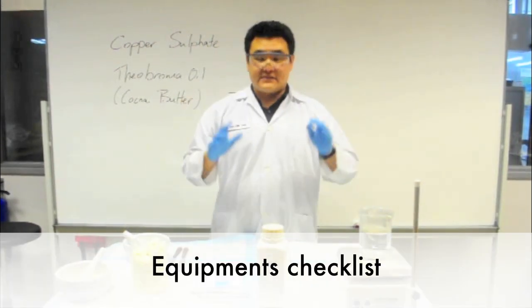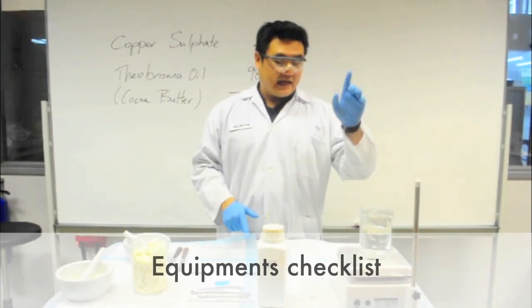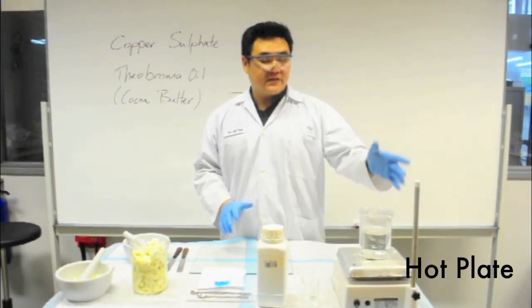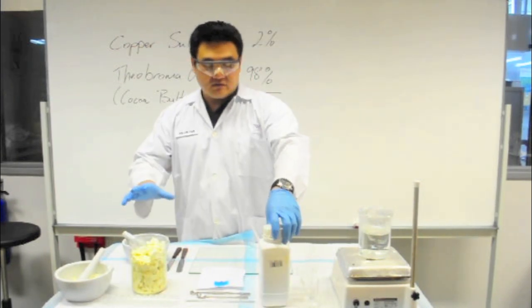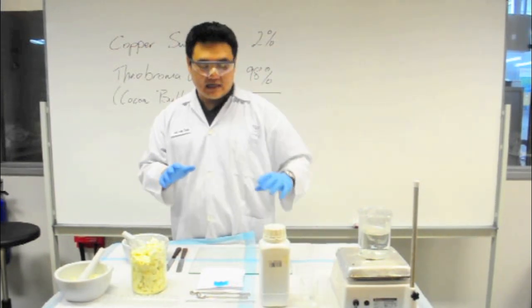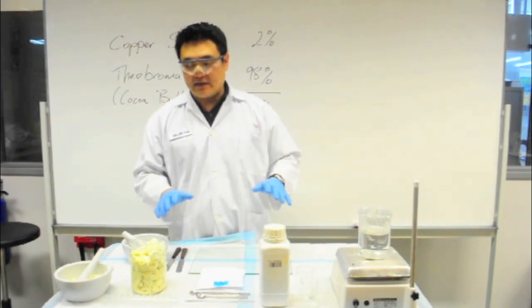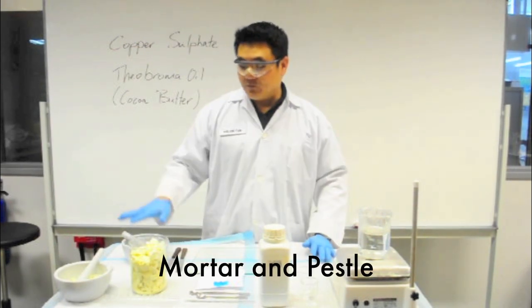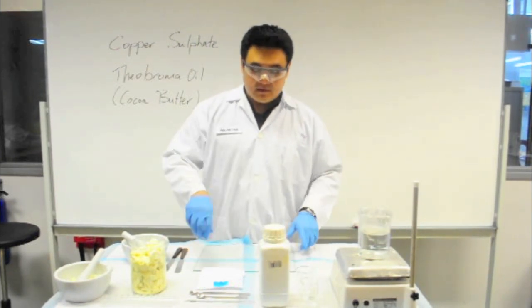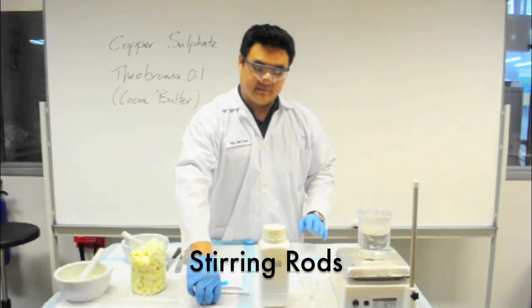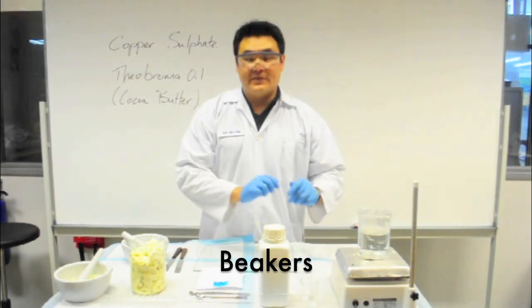Okay, so some basic equipment that we need. Your heat plate. So again, safety first, be careful. We are dealing with very hot steam as well. Your ingredients. So for today, we are going to be making copper sulfate suppository, which are explained later. Glass slabs, stirring rods, and your beakers as well.